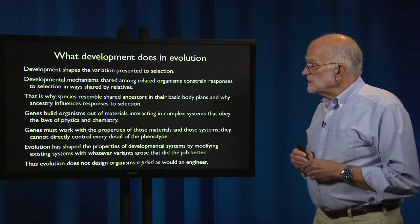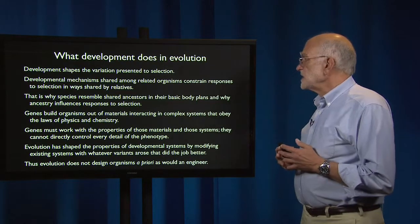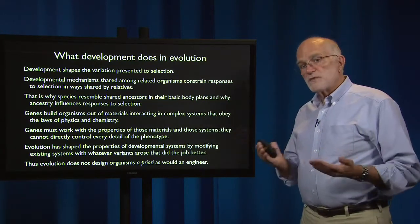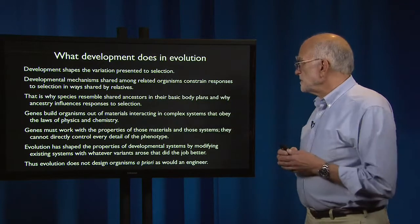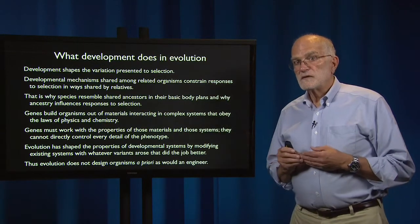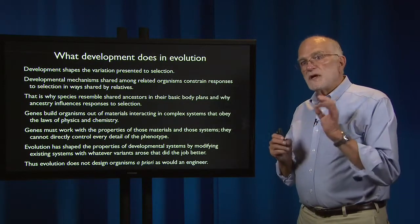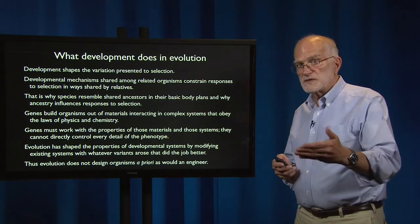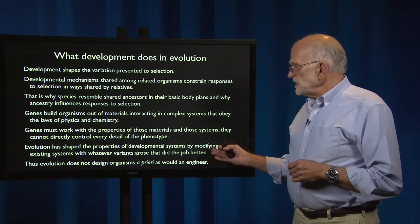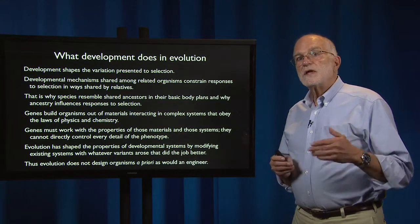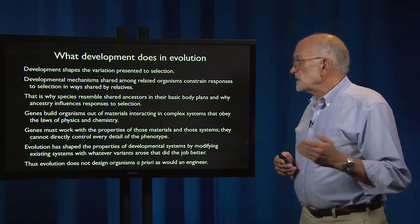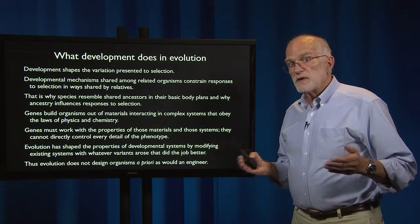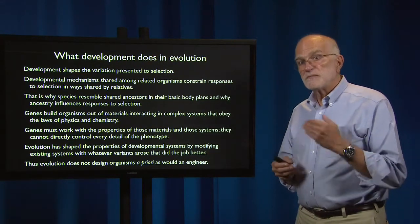Genes build organisms out of materials that are interacting in complex systems, and those materials have to obey the laws of physics and chemistry. So genes have to work with the properties of those materials in constructing a phenotype. They can't directly control every detail of the phenotype, so we shouldn't imagine that mutations are able to change things in arbitrary ways. They are handed a set of systems and materials and they have to work with it — not necessarily the best option, simply the best of those available.